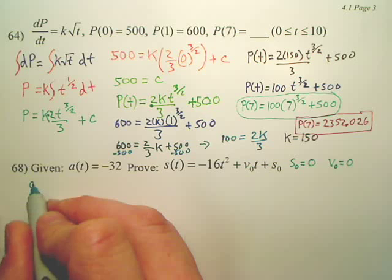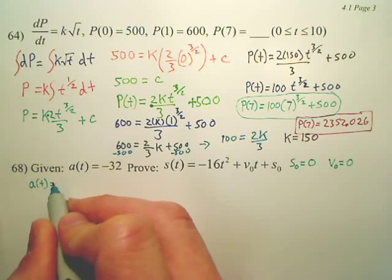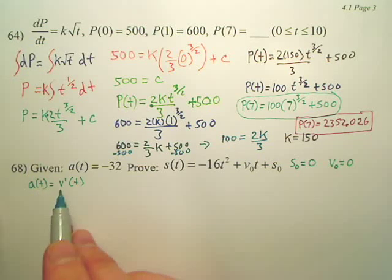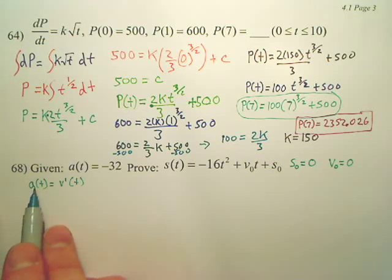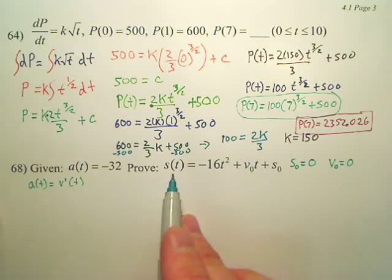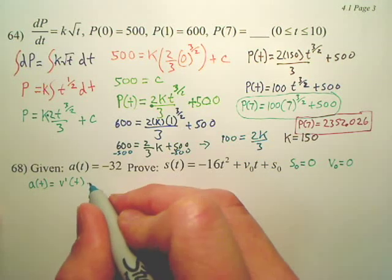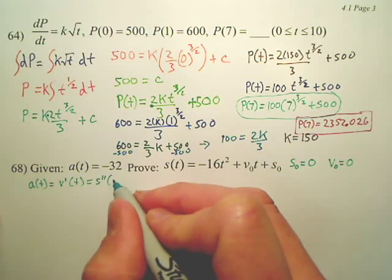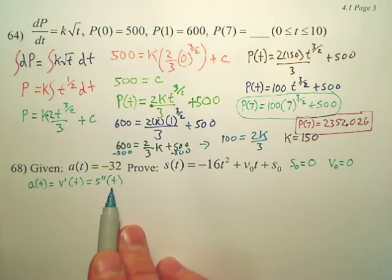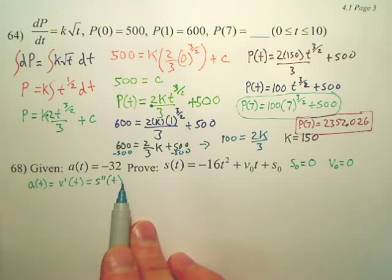We're going to need these two pieces of info. First of all, you need to understand that a of t is equal to the derivative of v of t. If I want to go from a of t to v of t, I'm working from a to v to s. a of t is equal to the second derivative of the position function. Basically, we want to go from here to here. We've got to work our way down integrating twice.